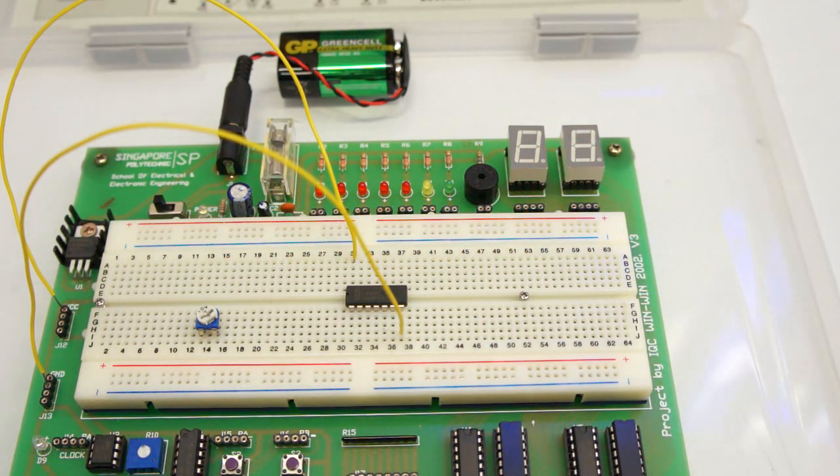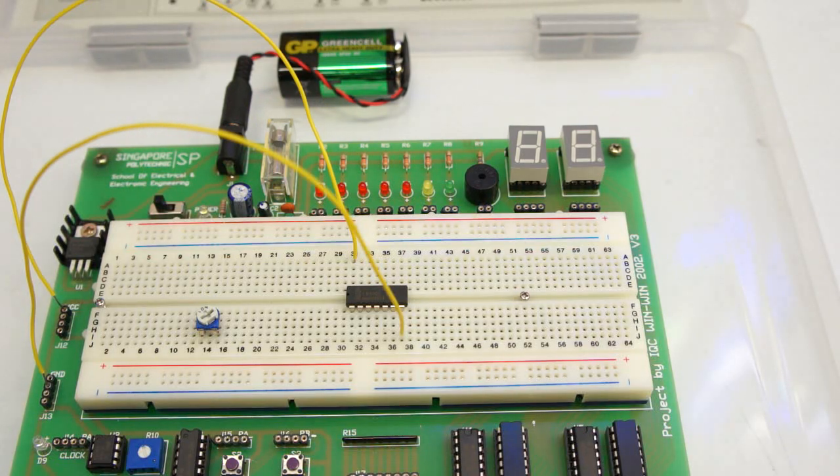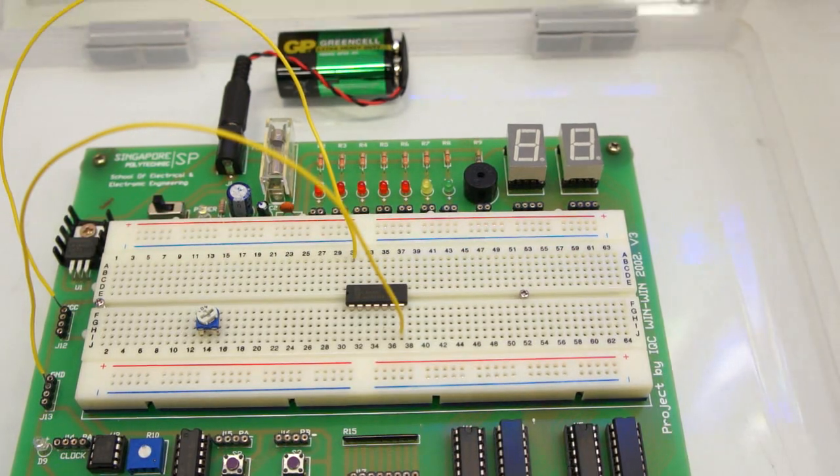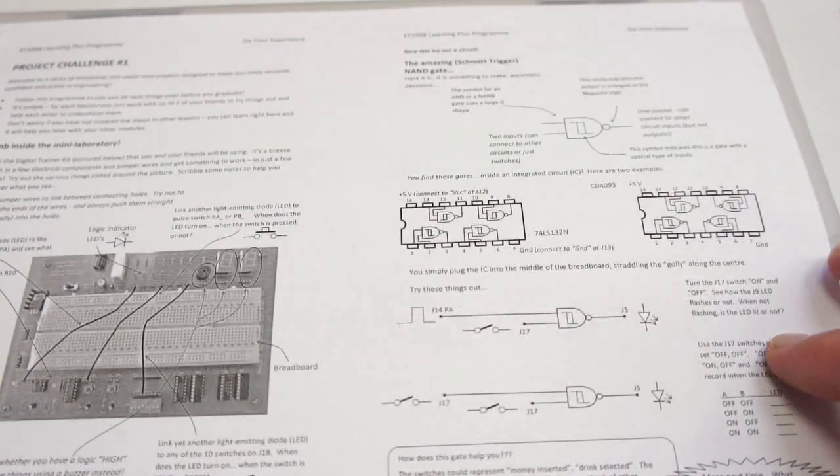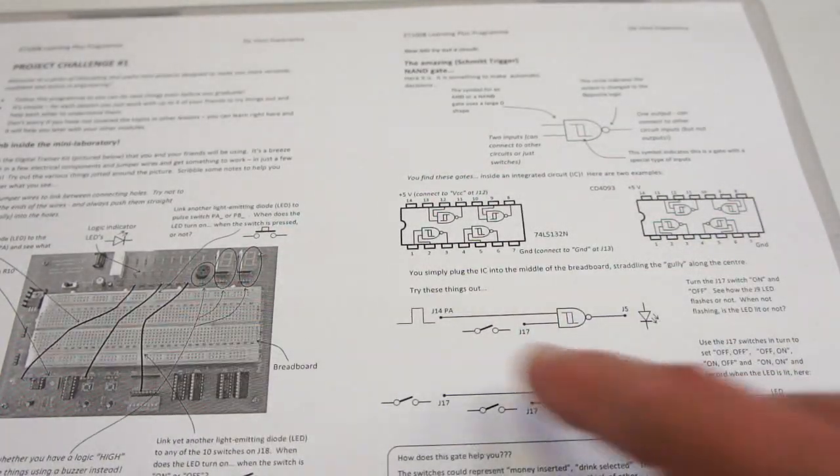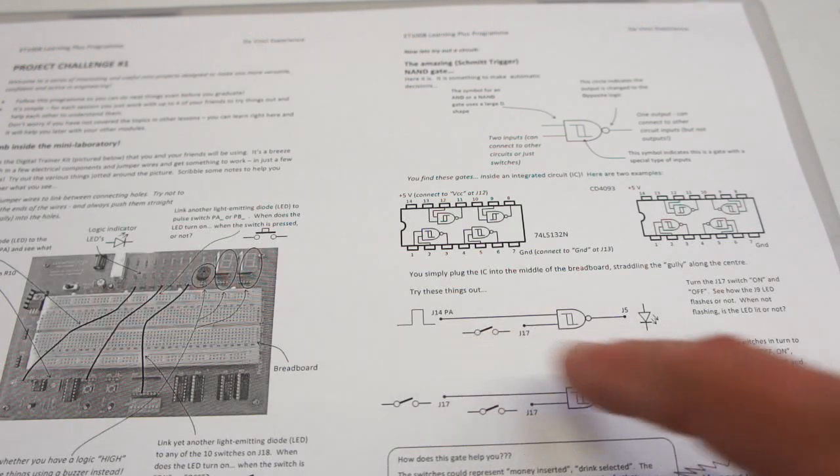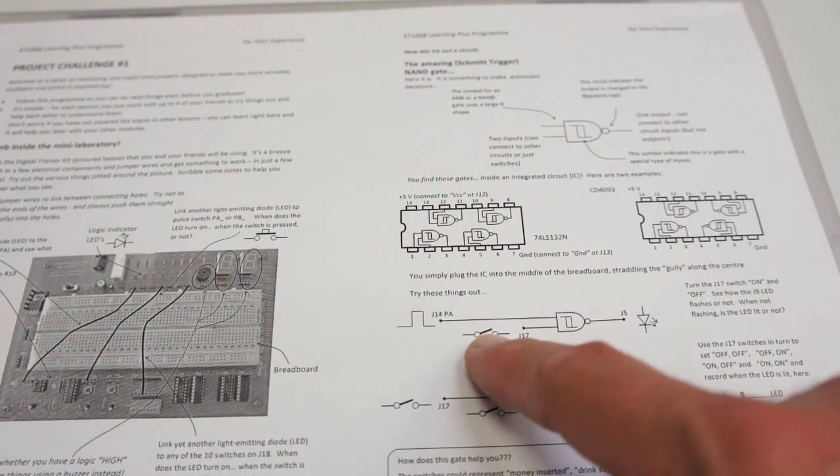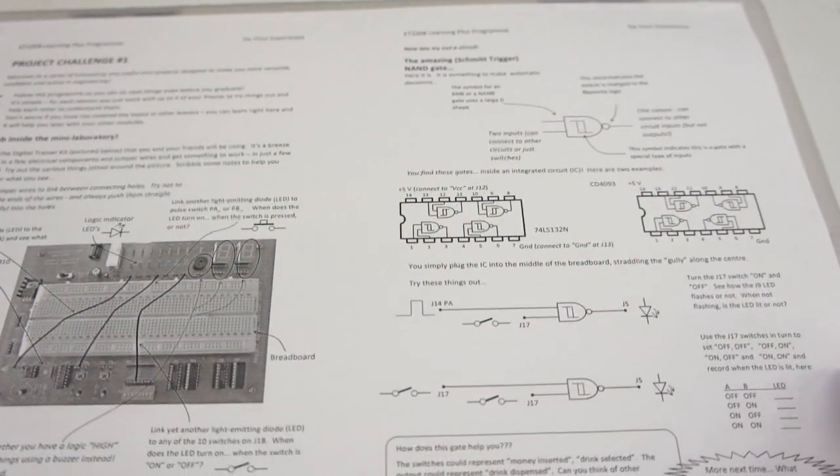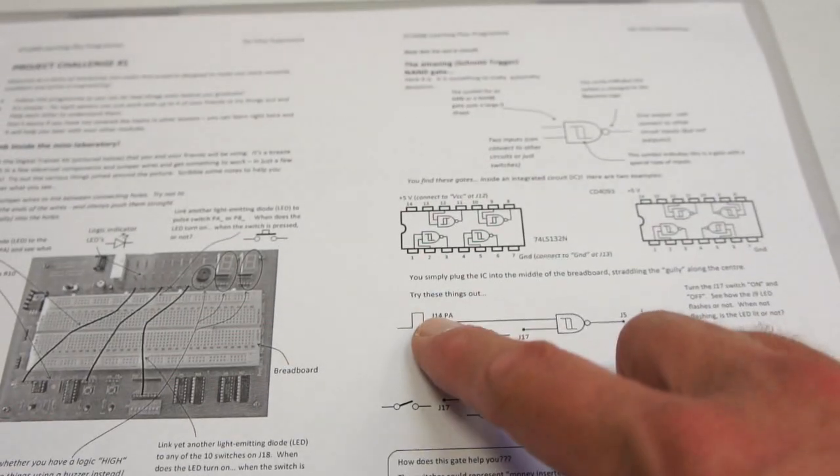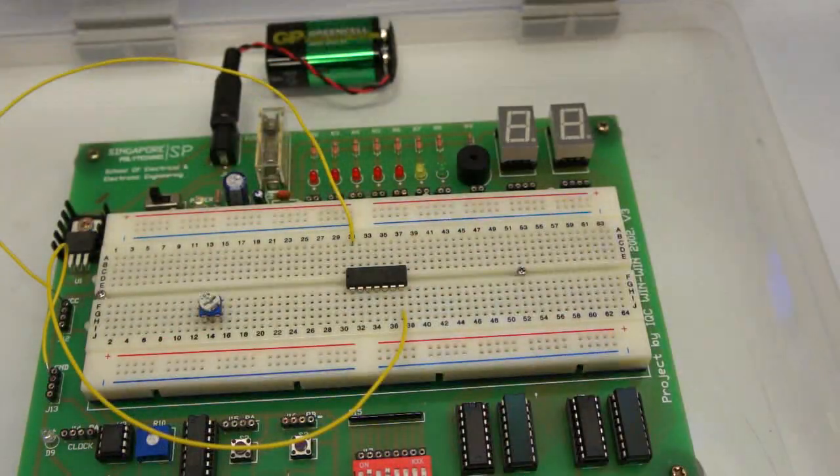There you have the supply. Now we can try the first circuit here. We're going to have pulses coming from the pulse generator and a data switch. It says J14 and J17. Let's do it.